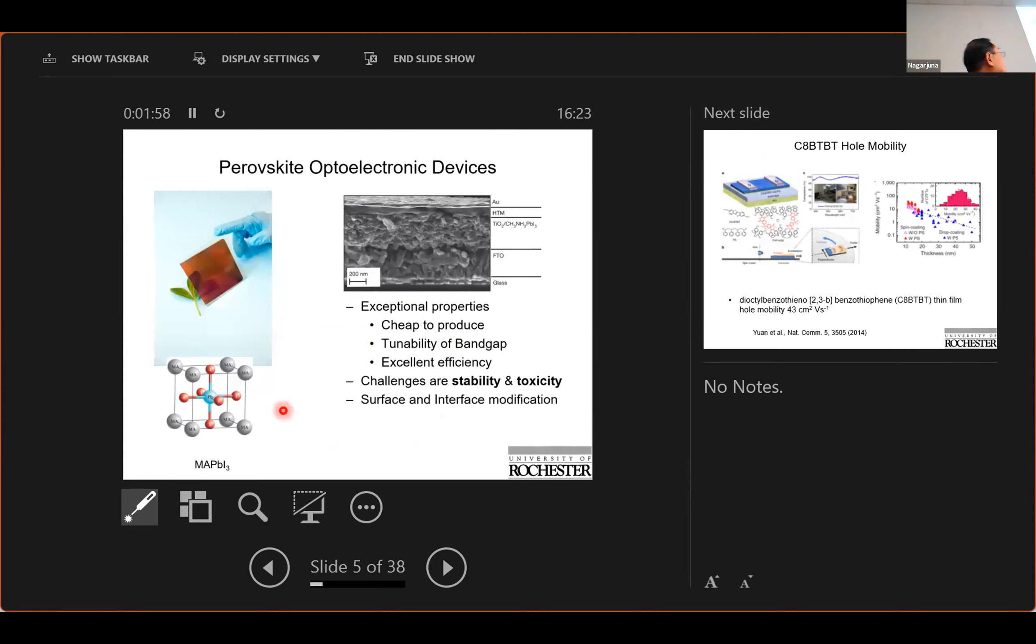Perovskite actually is a crystal structure and to make it simple, it's just a cubic. For example, you have a metal with lead at the center and then an eight corner with metal ammonium and then six phase center with iodine, for example, in this particular material. And so MAPbI3 and it has exceptional properties such as cheap to produce and you have the ability of the band gap to fit your application by changing materials and most remarkably the excellent efficiency. And there are also challenges in this material, especially stability and toxicity. And to solve that, surface interface modification is a very important measure.